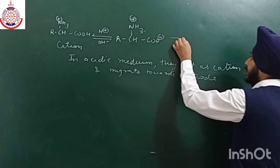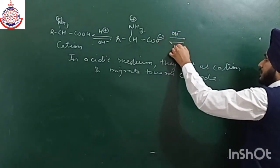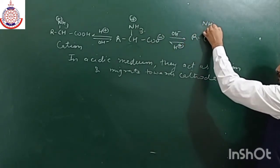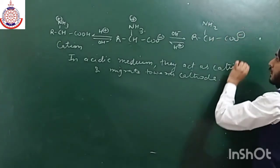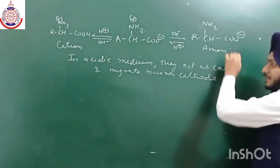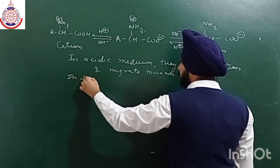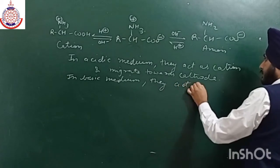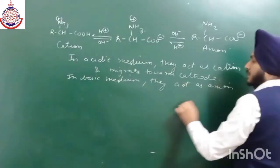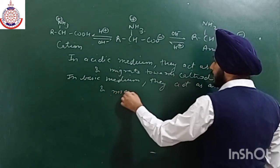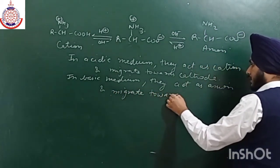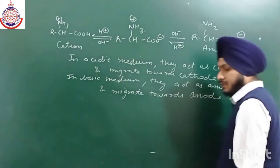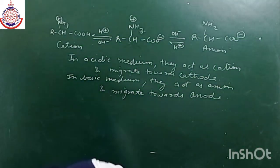In basic medium, OH⁻ attracts the H⁺ from the NH3⁺ group, producing an anion. So in basic medium, amino acids act as anions and migrate towards the positively charged terminal, that is the anode. There is a net migration taking place under an electric field.